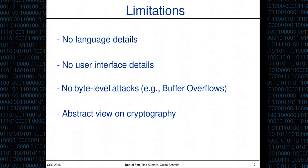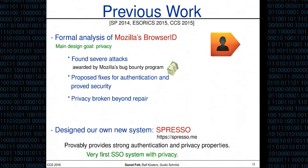We used this generic model in previous case studies: first to analyze the security and privacy of Mozilla BrowserID, a single sign-on system with a specific privacy goal. We found many interesting attacks on this system and were finally able to prove its security. However, we also noted that privacy is essentially broken beyond repair. Therefore we went on and designed a new single sign-on system called Espresso to demonstrate that this kind of privacy is achievable on the web, and that was our last case study before OAuth.